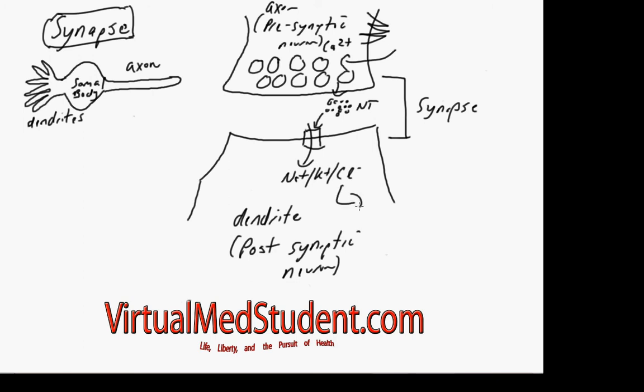As a result, you can get either an inhibitory or excitatory response in the postsynaptic neuron or the dendrite, depending on what type of neurotransmitter is interacting here.